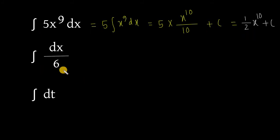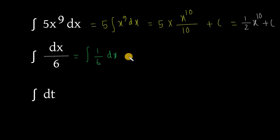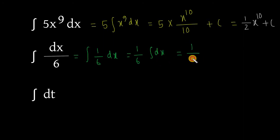Ekhane aamra dtho shwamashat dike taakai — integral of dx by 6. 6 er maan aamra ninnye korba. Aamra ekhane integral of dx by 6 ke integral of 1 by 6 dx aakara liki. Ekhane 1 by 6 hoche tti kono constant. Aamra 1 by 6 baire niya ashte paari. Aamra paatsi 1 by 6 into integral of dx. Ekhane integral of dx mane hoche x plus c. Taahle aamra ekhane pabo 1 by 6 into x plus c. Correct. Aamra ekhane integral of dx by 6 equal to 1 by 6 x plus c.